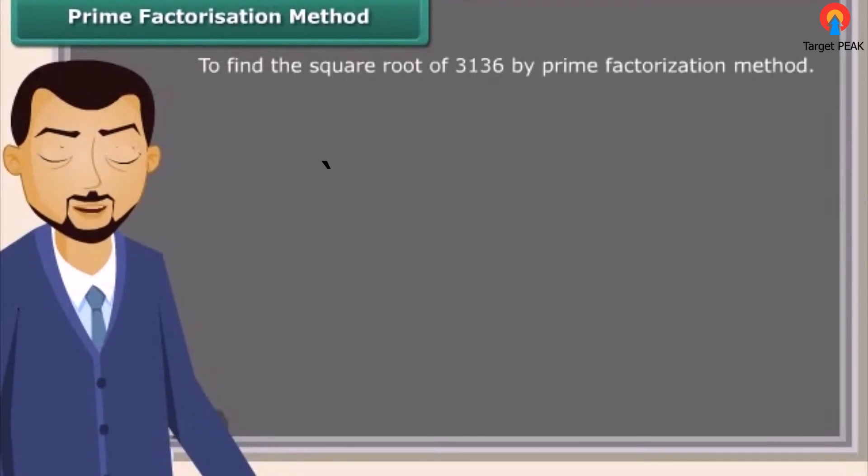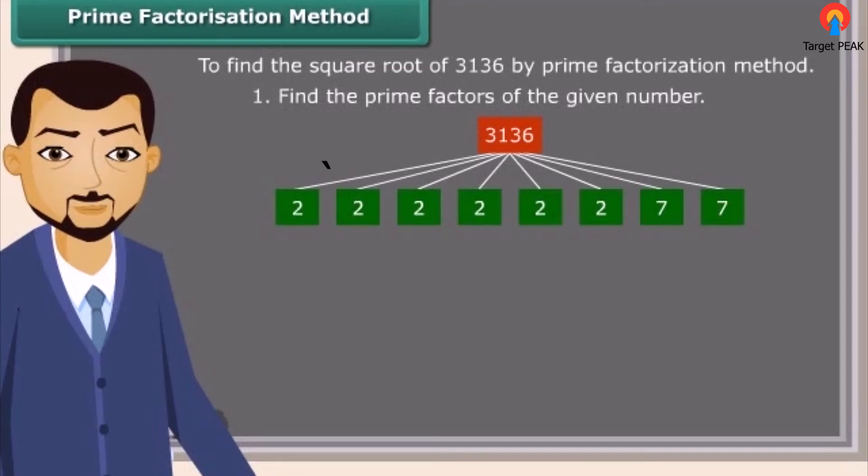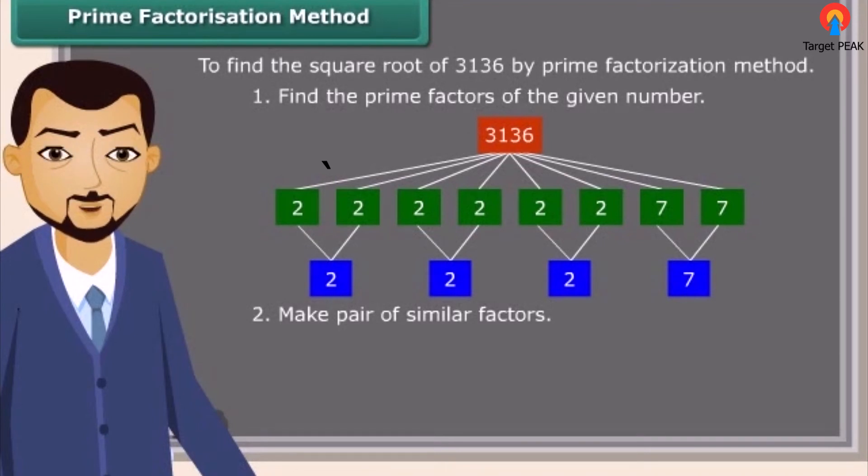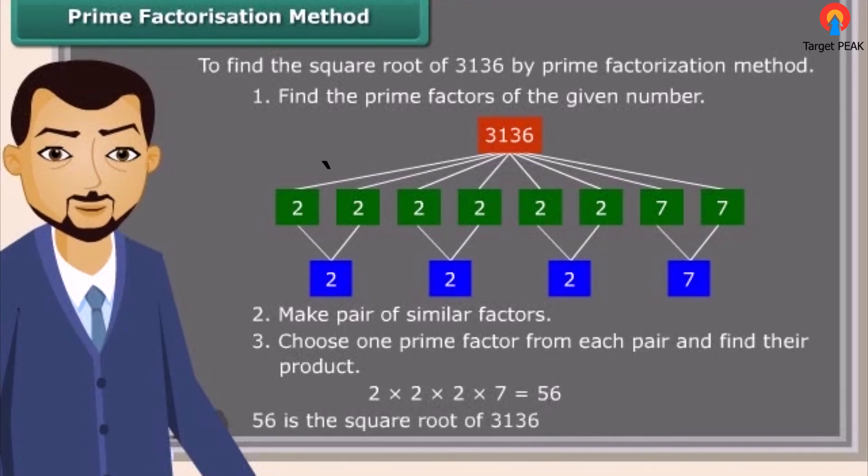Now, we will try to find the square root of a number by prime factorization method by following some steps. First of all, find the prime factors of the given number. Make pair of similar factors. After that, choose one prime factor from each pair and find their product. So, the product thus obtained is the square root of the given number.